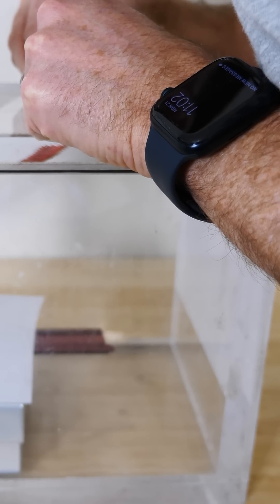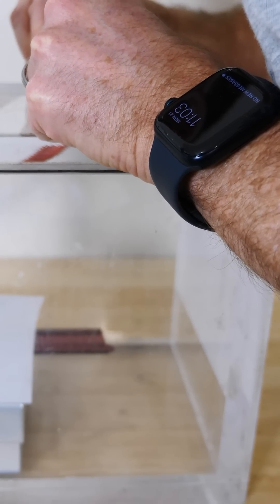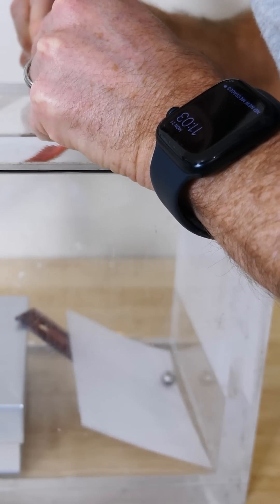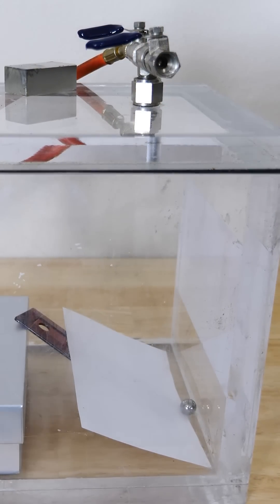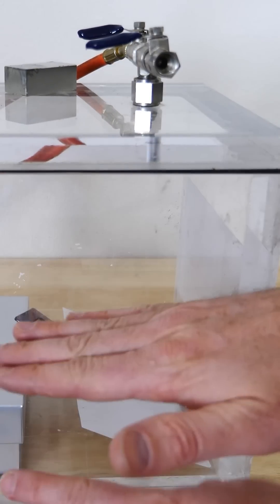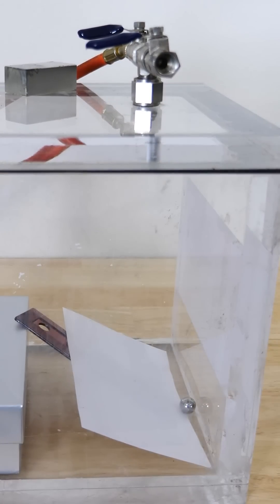Three, two, one. Easily pops off of there. Look at that. So with no atmosphere in there to hold the paper down, the ruler just pops right off.